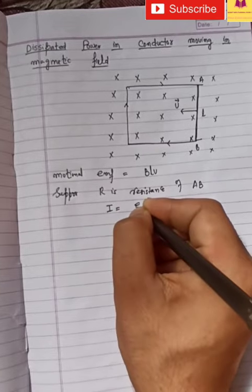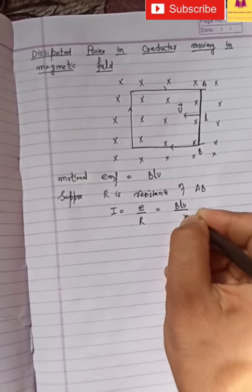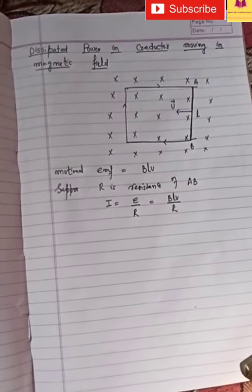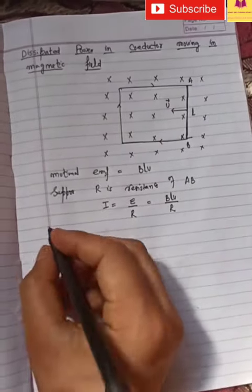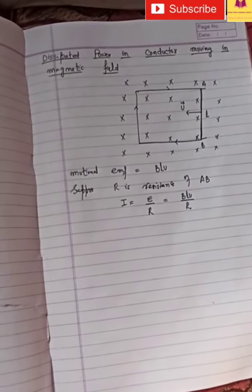How much current will be in it? It will be E by R, that is, it will be BLV by R. As per Lenz's law, you know the direction is opposite to that of motion.